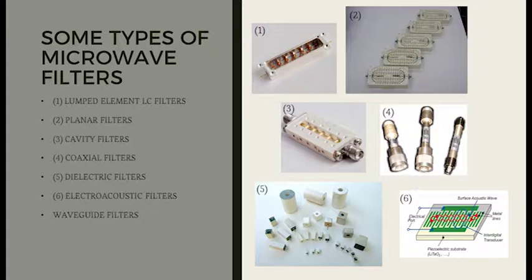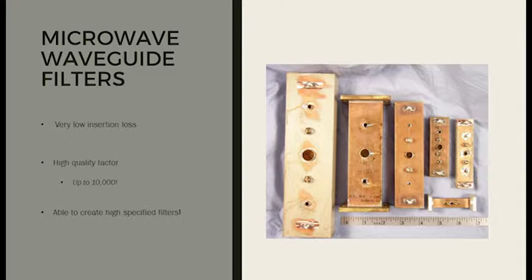The one that concerns us the most is the waveguide filter, mostly because it's the basis for our chosen article. Waveguide filters are essentially hollow tunnels that have very low energy loss because the energy is contained inside the guide in air rather than in a conductor. With the low energy loss, it has a very high quality factor — in fact, up to a theoretical 10,000. With a high quality factor, this means we're able to design tightly controlled, sharp filters with very predictable results.